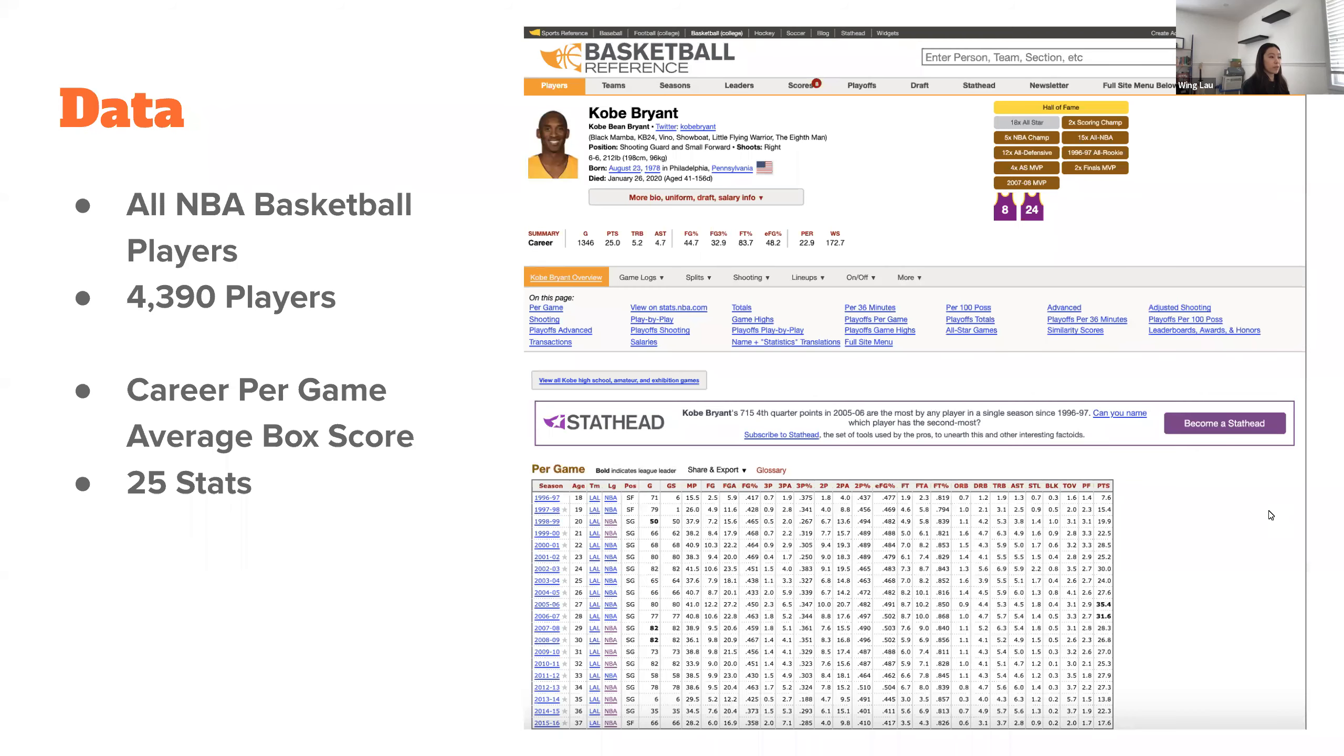I scraped basketballreference.com, and I took all NBA basketball players and their career stats. More specifically, their per game average box scores, and that's just a detailed game summary. I had a total of 25 features.